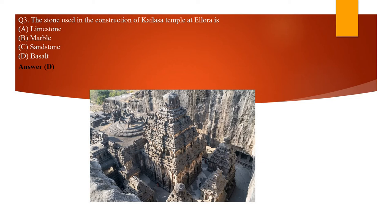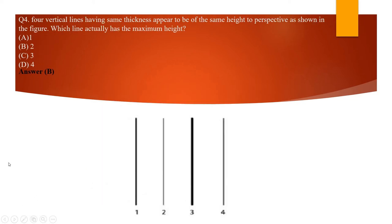The next question: the stone used in the construction of Kailasha Temple at Ellora is — the answer is basalt. These are basalt rocks. Note that the construction of this temple started from top to bottom, not bottom to top. Sandstone is found in desert areas and is a metamorphic rock mostly found in seashores or deserts, so it is not the correct answer here.